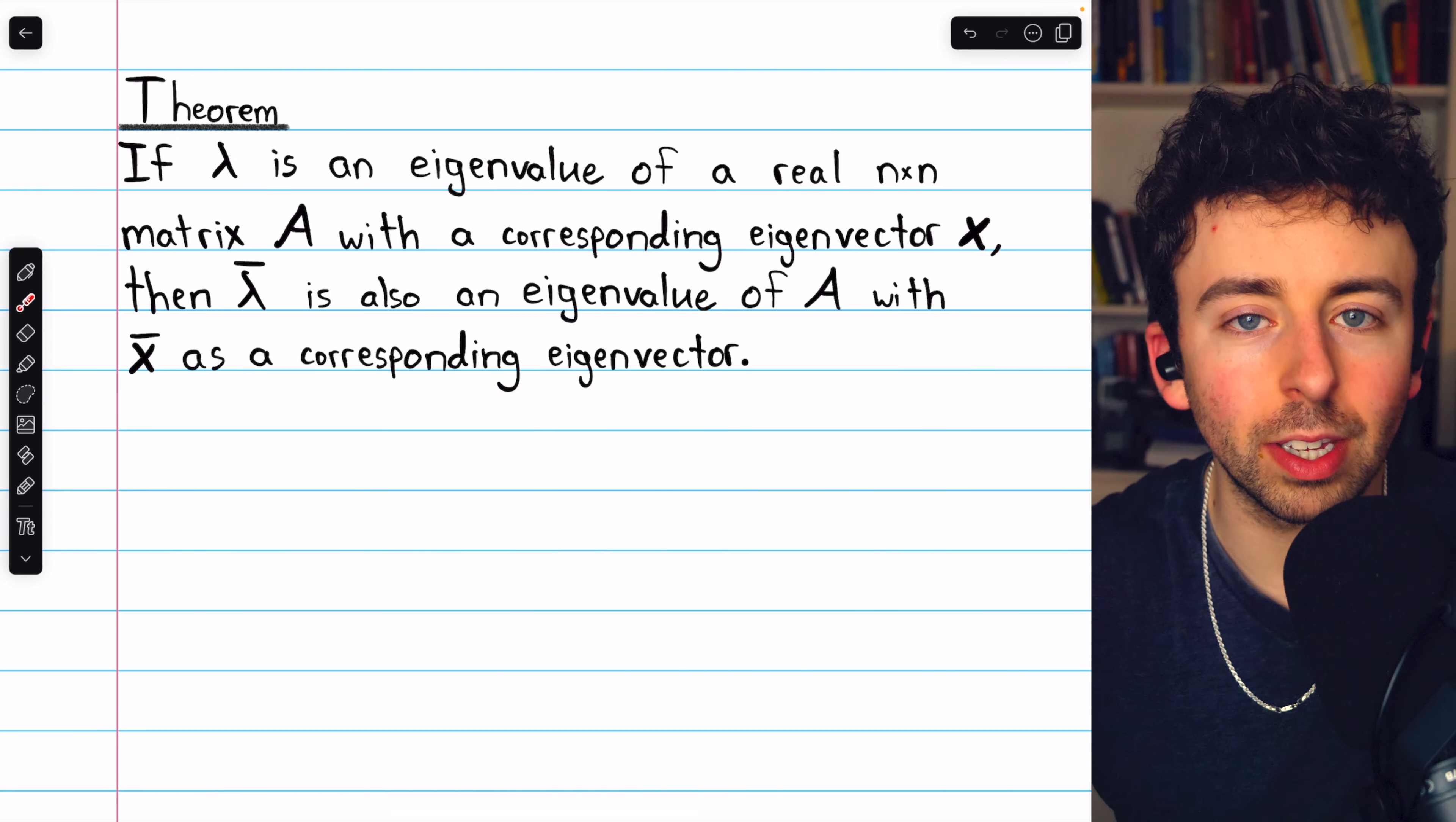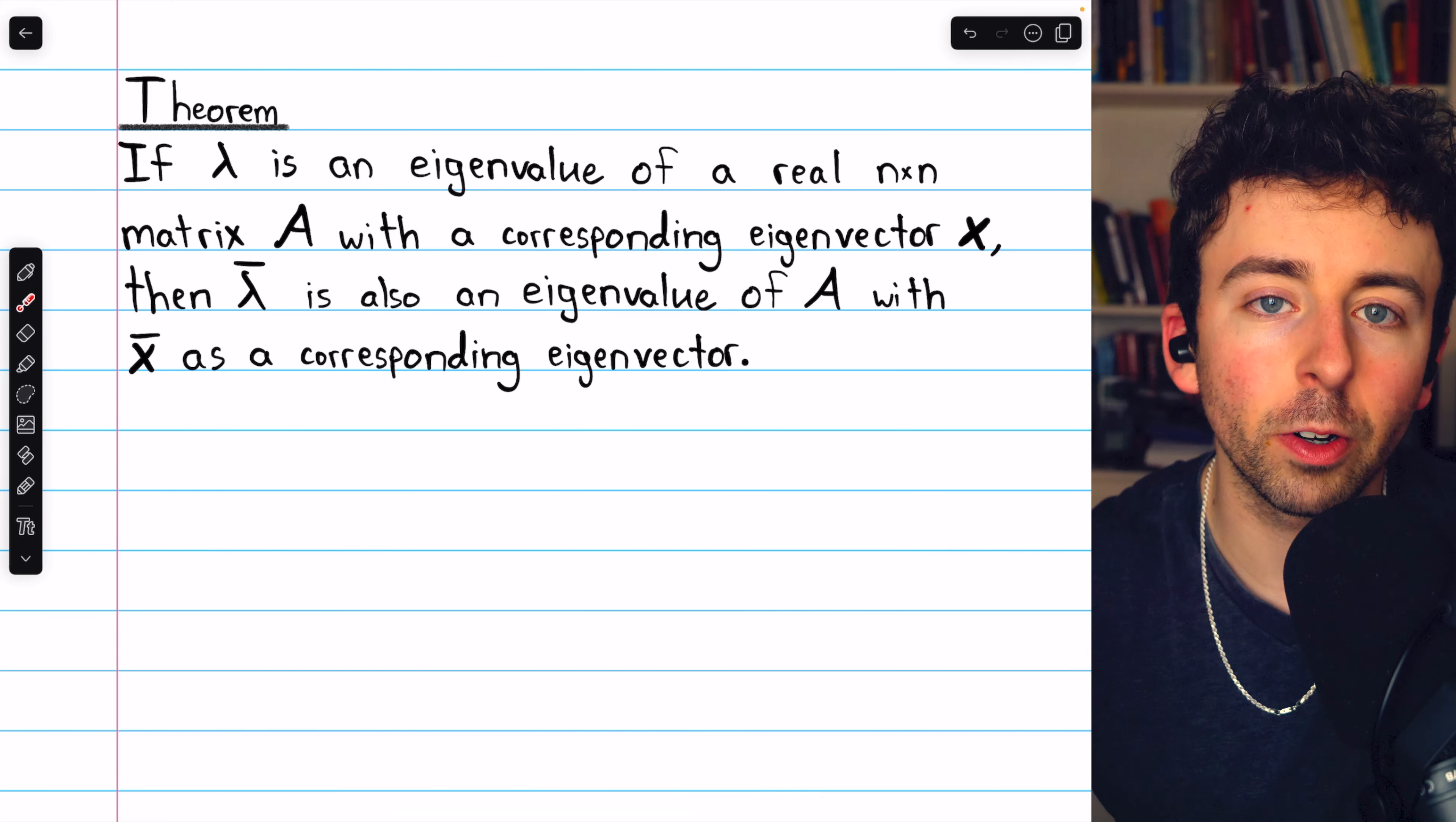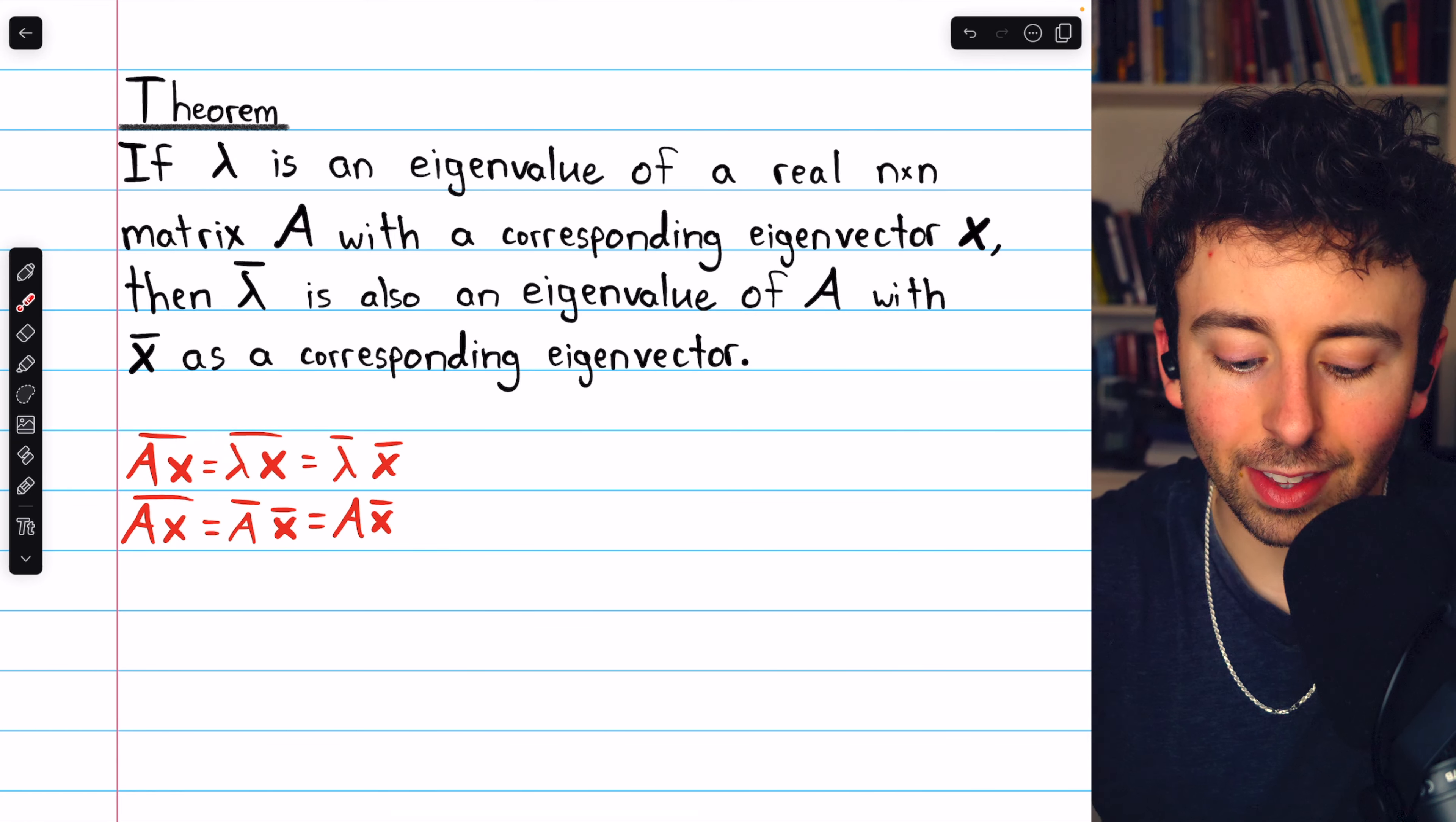In short, we could say that eigenvalues and eigenvectors of real matrices occur in conjugate pairs. If we have a complex eigenvalue and corresponding eigenvector, their conjugates are also eigenvalues and eigenvectors of the same matrix. And here's a quick proof.